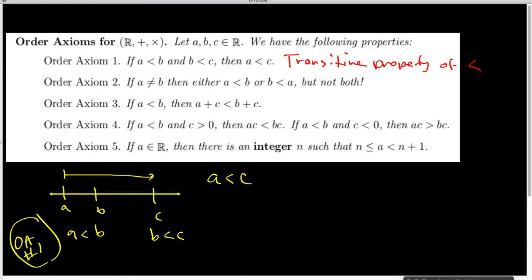Order axiom number two is often called the law of trichotomy. We have, if A and B are distinct, either A is less than B or B is less than A but not both. And I want to kind of think about what does that axiom say in terms of the geometry. So here is my number line.